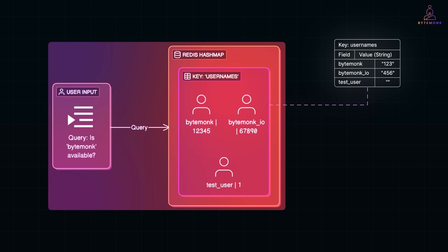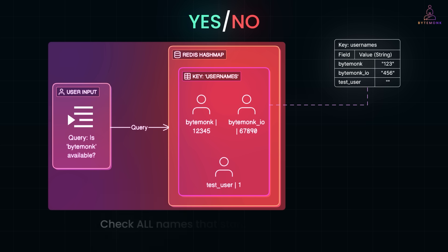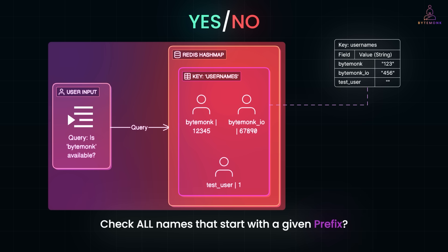It's a fast in-memory check that avoids touching the database for the vast majority of lookups. But of course, you can't store billions of usernames in a single Redis instance forever — memory is finite. Regardless, Redis hash maps work brilliantly for exact match lookups. If the username exists, we get an answer instantly. But what if we want more than just a yes or no? What if we want to suggest similar available usernames, or check all names that start with a given prefix?